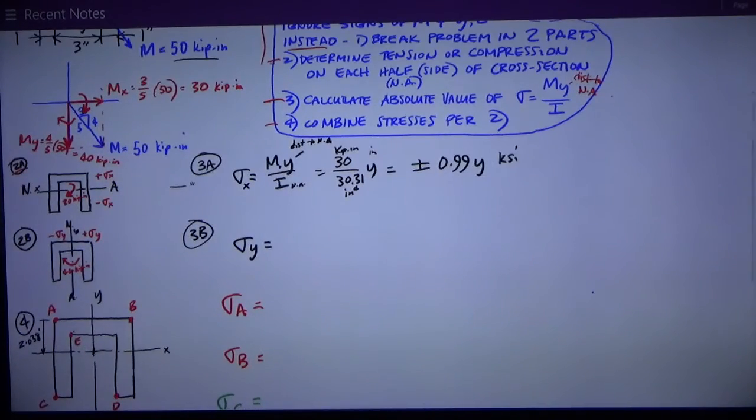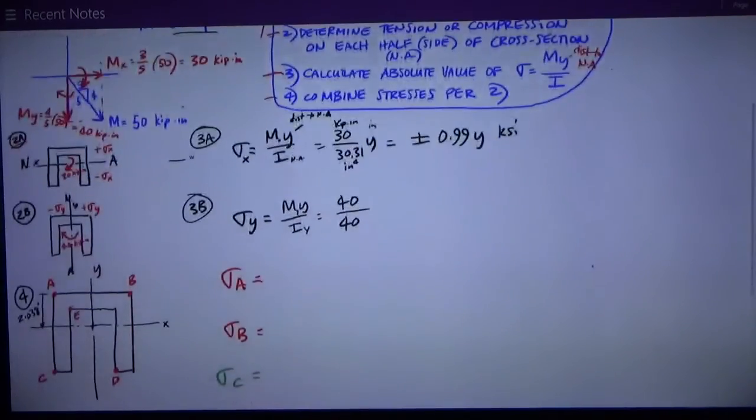Similarly, for bending about the y-axis, I have that same My over I. In this case, it's My and Iy. The numbers are 40 kip-inches for M. The moment of inertia about the y-axis from up here is 43.08. And in every case, that's multiplied by the distance to the neutral axis. So this can be simplified as plus or minus, depending on whether or not I've got compression or tension, 0.9285y ksi. So now I've got an expression for sigma x and sigma y just based on the distance to the neutral axis.